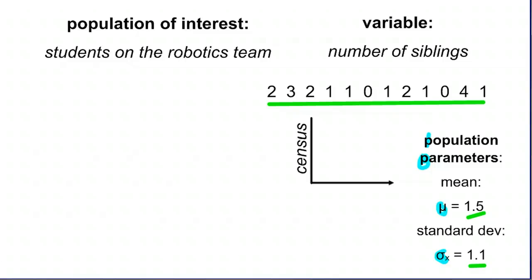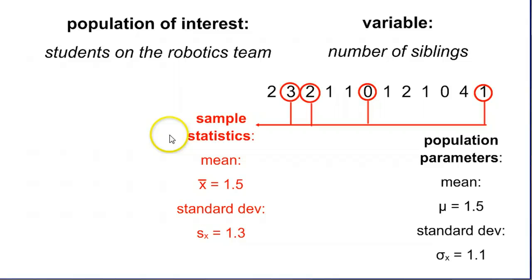Let's go to make believe land for just a moment. Let's imagine we don't have access to all 12 of these. We don't know the true parameters. And we want to take a sample. Let's say we're only going to randomly choose four of these people on the team. It might look something like this. Let's say we talked to this person with three siblings, this one with two, this was zero, and this one with one. We take these four numbers only, because those are the only numbers we know about, and we can find the mean and standard deviation. In this case, our particular sample ends up with the mean being exactly the same as the population mean. Coincidence? Perhaps.